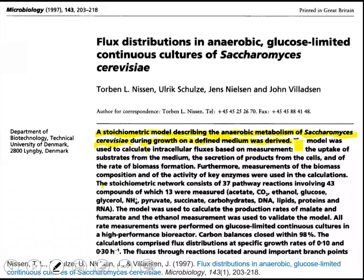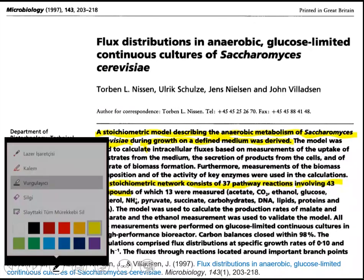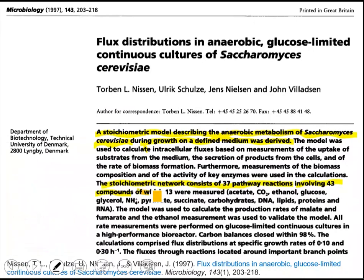The stoichiometric matrix consists of 37 pathway reactions involving 43 compounds of which 13 were measured. And here you see the list of measured rates. They were able to measure so many rates. And the model was used to calculate production rates of malate, fumarate, and ethanol to validate the model.